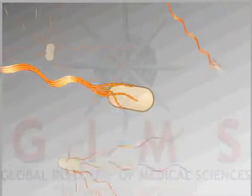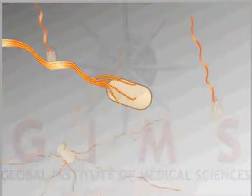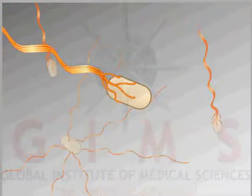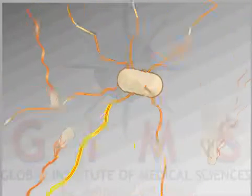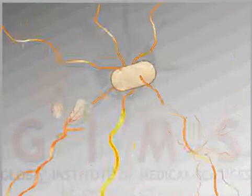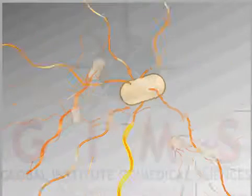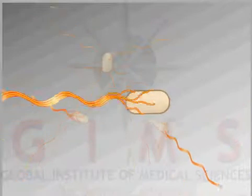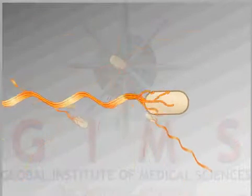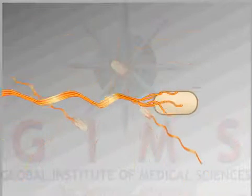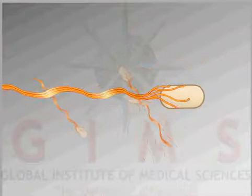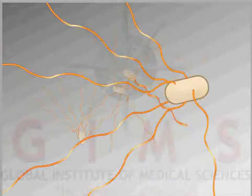Periodically, one or more flagella reverse their rotation to clockwise, disrupting the entire bundle and causing the cell to tumble. The cell ends up pointing in a random direction. Soon, all of the flagella again rotate in the counter-clockwise direction and the cell swims forward. The repeated course of swimming and tumbling results in what is known as a random walk.